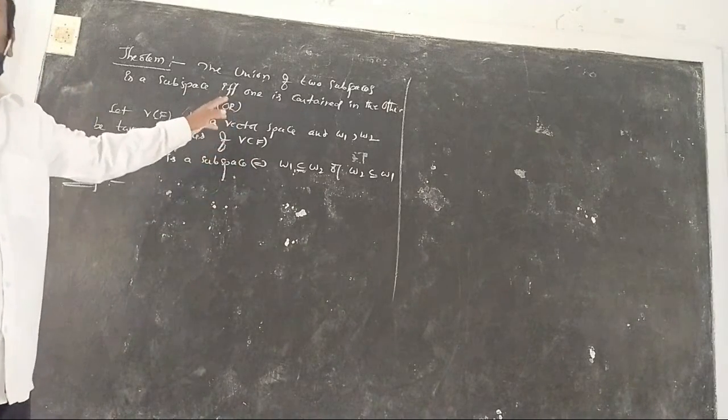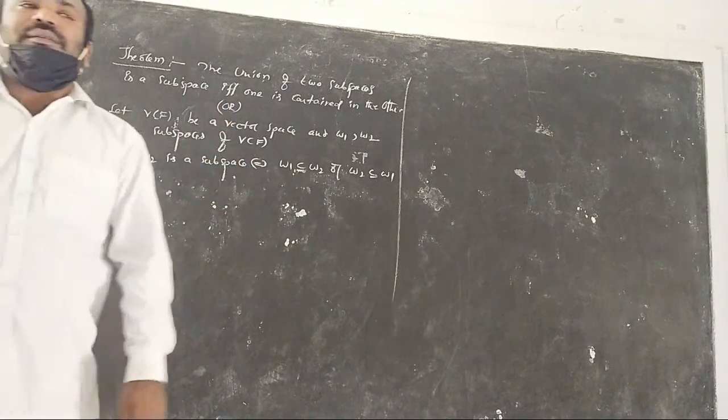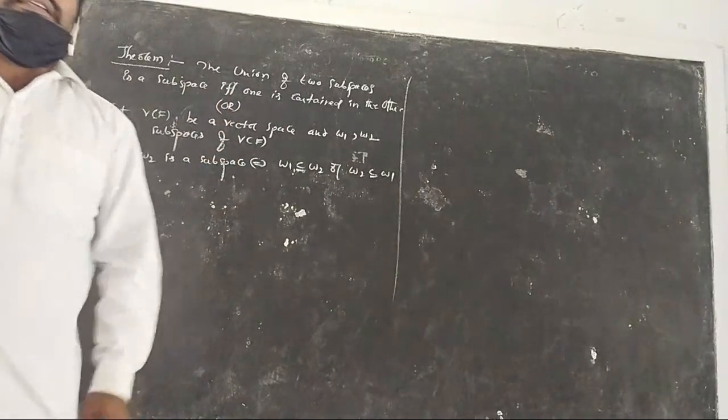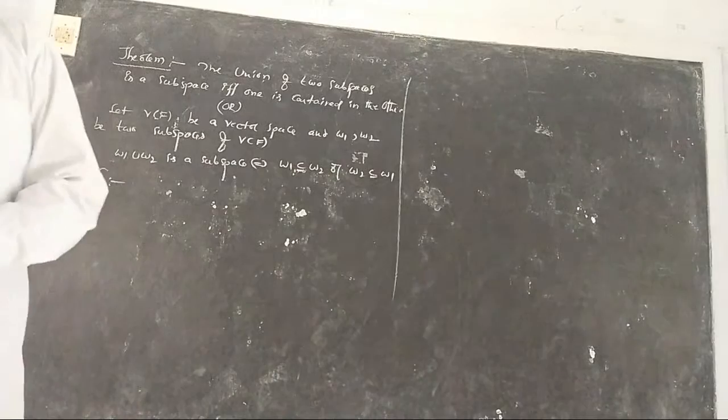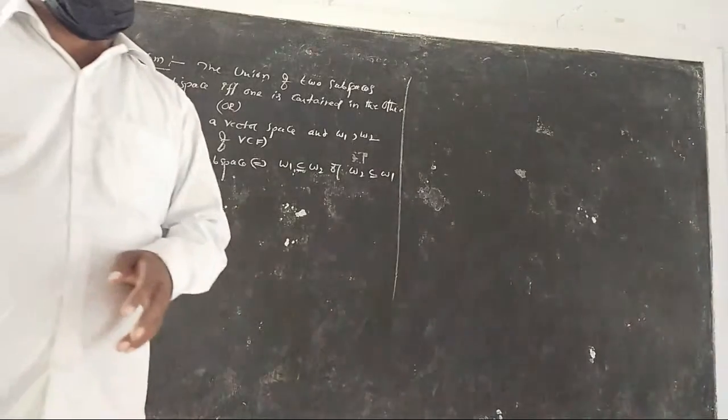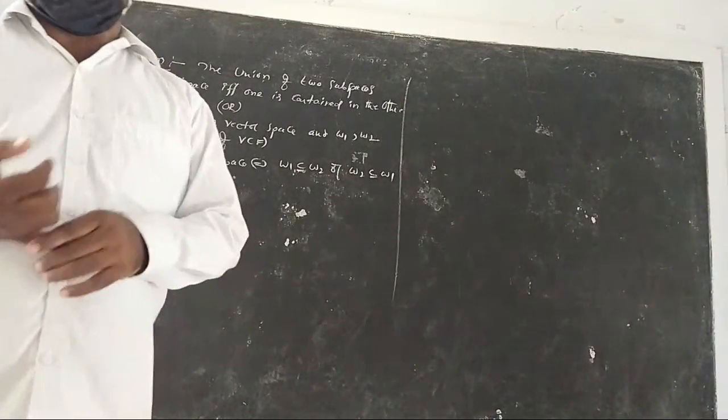Let us write the proof. The proof is divided into two parts. One part is the necessary condition. The second one is the sufficient condition.